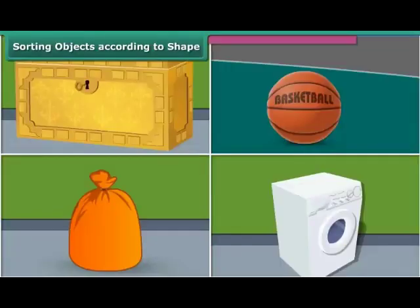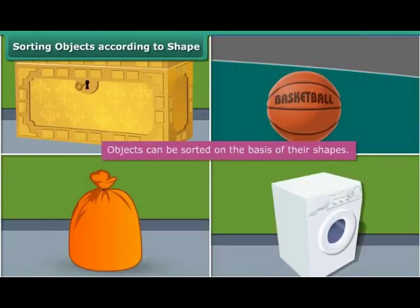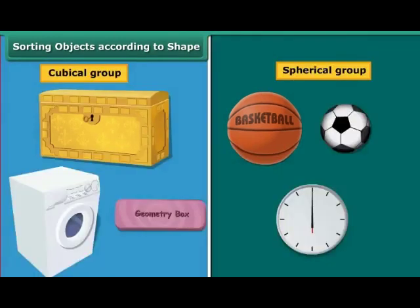A box is a cube or cuboid whereas a ball is a sphere. A laundry bag is cylindrical in shape whereas a washing machine is cuboidal. Thus we can classify objects on the basis of their shapes. Circular or spherical objects form one group, while cubical, cuboidal, square, and rectangular objects form another group. Such classification allows us to study and analyze the properties of different shapes.